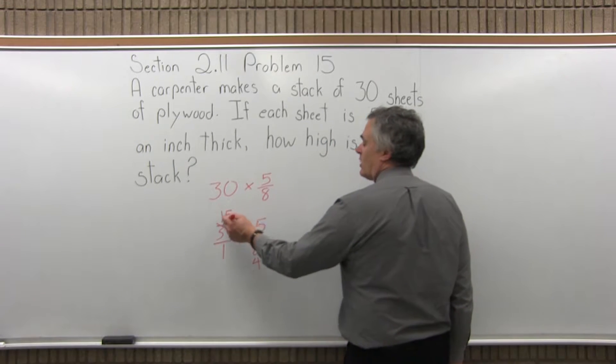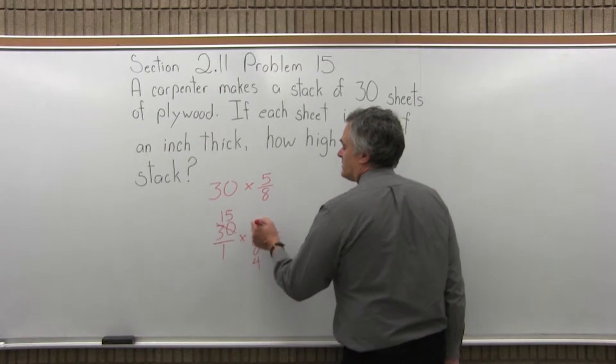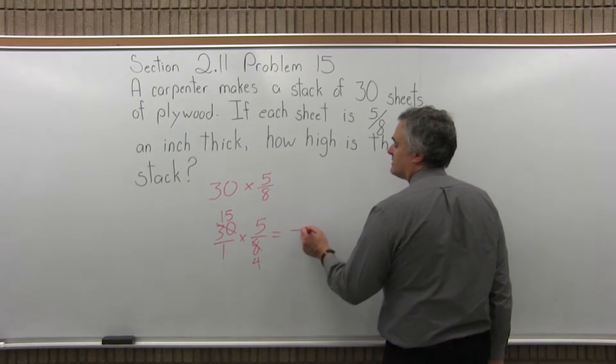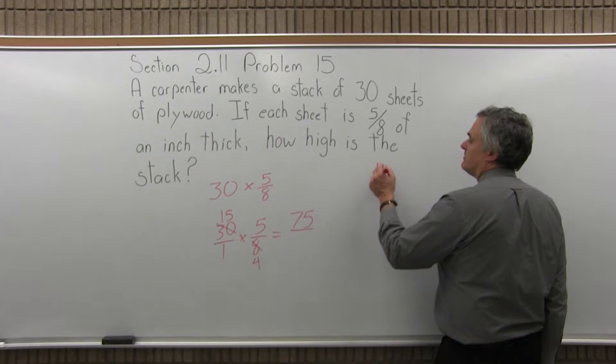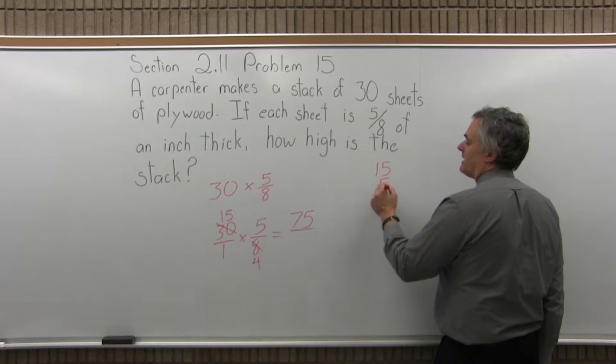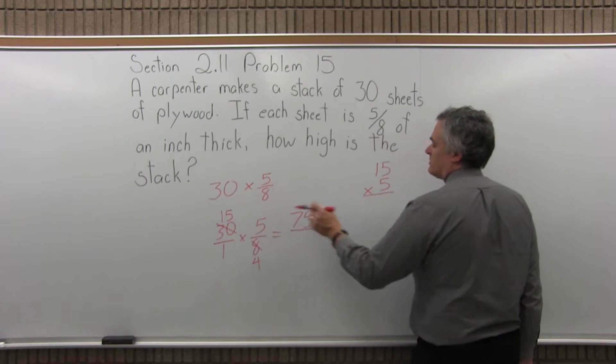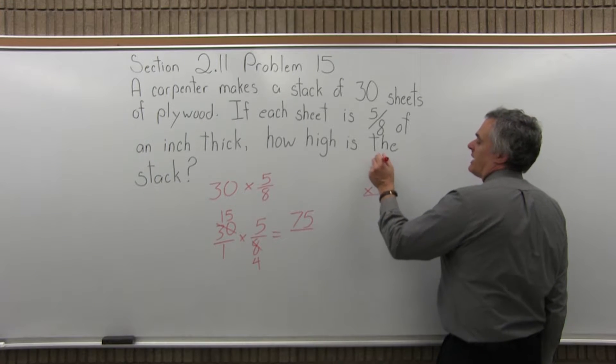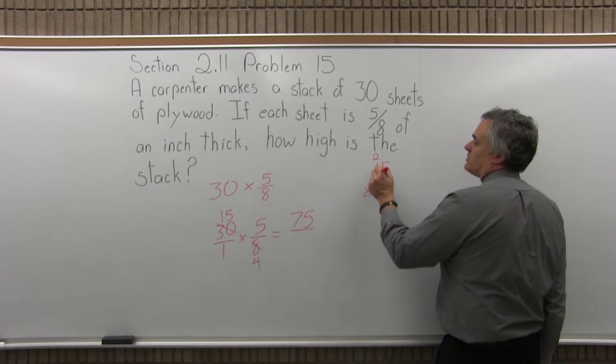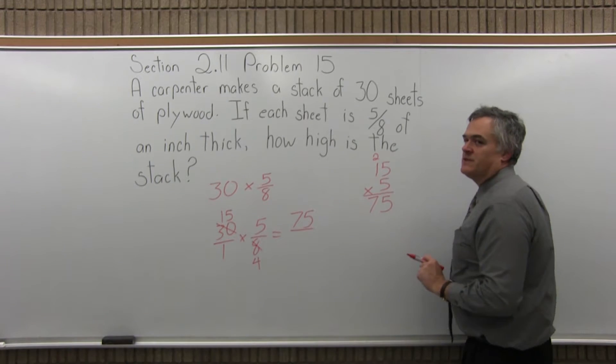So now I can multiply top times top, bottom times bottom. So the tops are numerators multiplied together, 5 times 15, I know that's 75, you may or may not recognize it. If you don't, just take a second to go off to the side and do the multiplication. 5 times 15, those are my numerators multiplied together. 5 times 5 is 25, carry the 2, 5 times 1 is 5, 5 plus 2 more is 7, so sure enough it is 75.